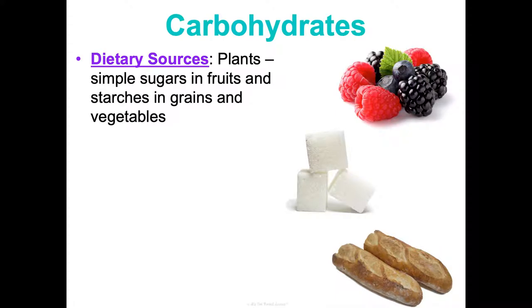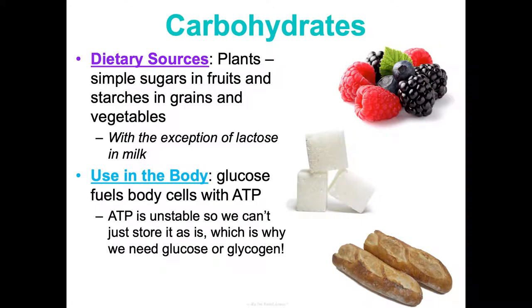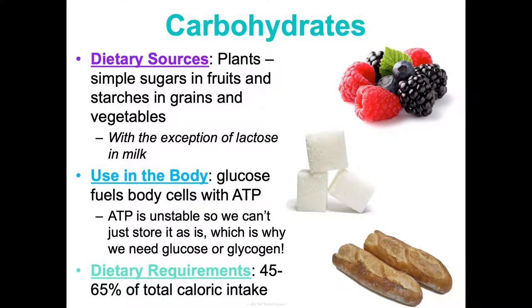First, carbohydrates: they come mainly from plants — simple sugars in fruits, starches in grains, and vegetables. The main exception is lactose, the sugar in milk. Our body uses glucose from carbs to fuel cells with ATP. ATP is an unstable molecule, so we need glucose or glycogen we can break down into glucose to store energy. About 45 to 65 percent of your total caloric intake should be designated for carbohydrates.